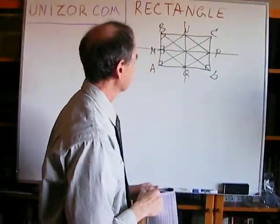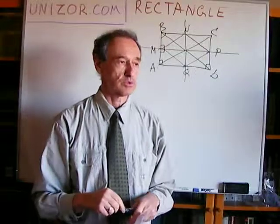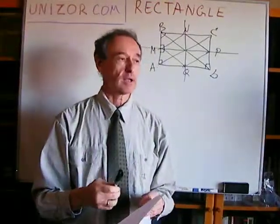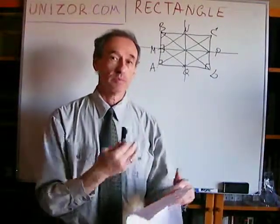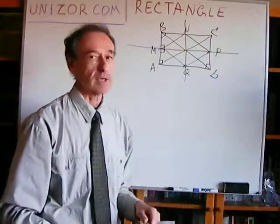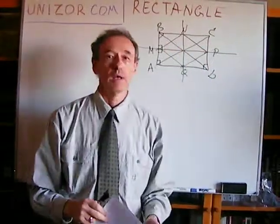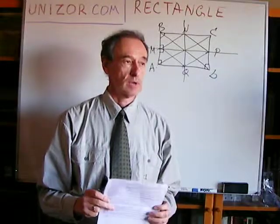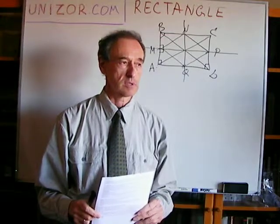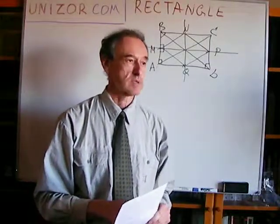That concludes the specific properties I wanted to talk about regarding rectangles. Not many of them, because most of the properties a rectangle inherits from the parallelogram — it adds something new, primarily related to equality of the diagonals, symmetrical axes, and the fact that all vertices have right angles. The only thing left for the next lecture is squares and the area of quadrangles.